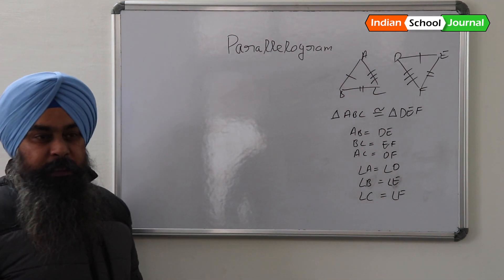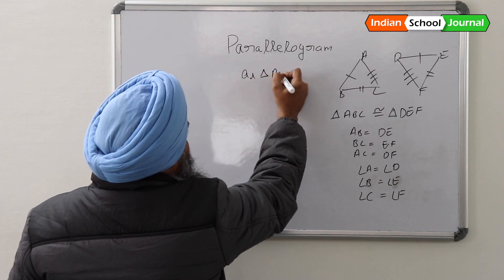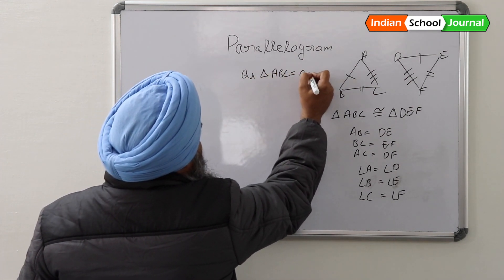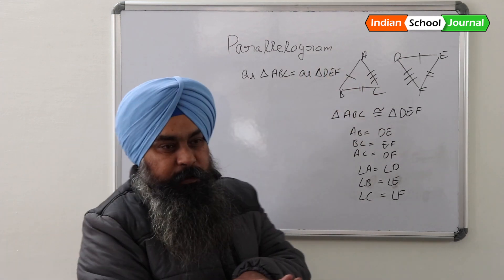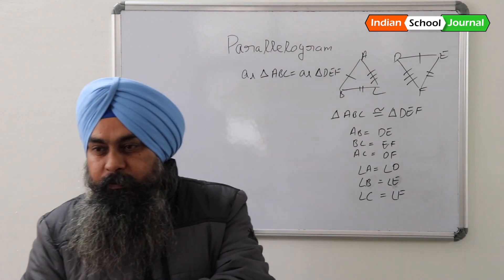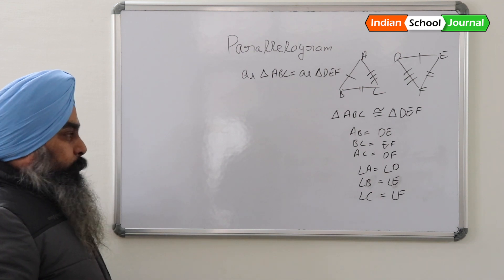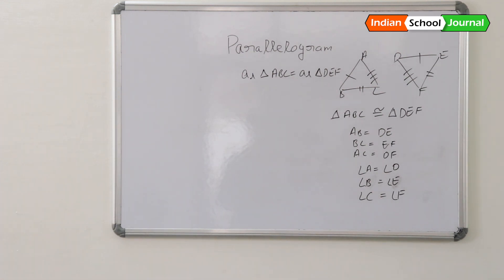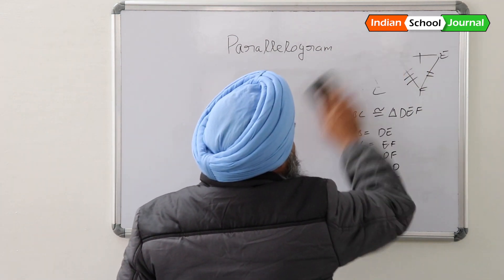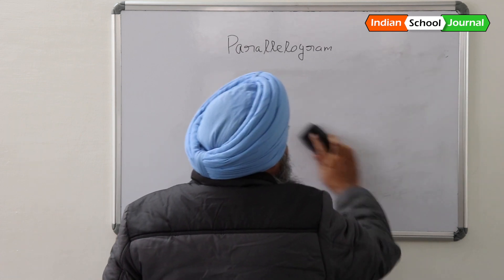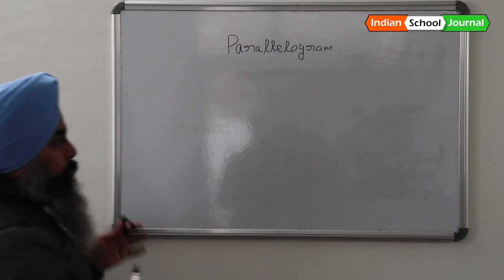There is one more thing: the area of triangle ABC is equivalent to the area of triangle DEF, because they are overlapping each other and will have the same area. Using this, we will be proving something for a parallelogram.